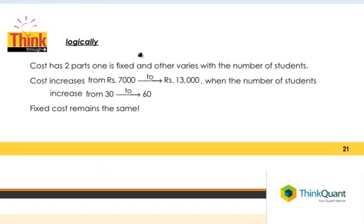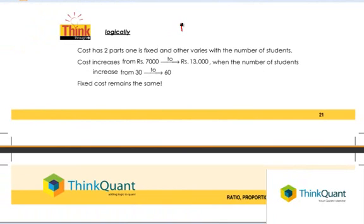We can actually logically think through this problem also without using the variable. We know that the cost has got two parts: one is a fixed part and the other is a variable part which varies according to the number of students.